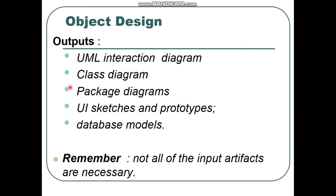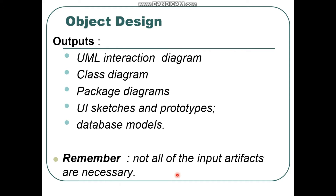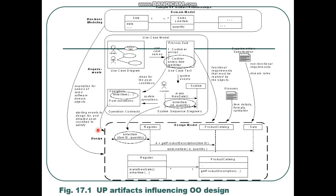The outputs we have in object design are: first, UML interaction diagram; second, class diagram; third, package diagram; fourth, user interface sketches and prototypes; and the last one is database models. Remember, not all of the input artifacts are necessary. These are some unified process artifacts influencing object-oriented design.